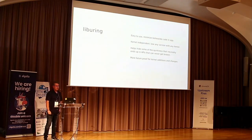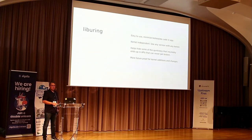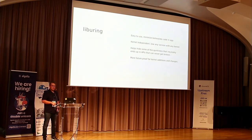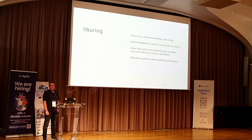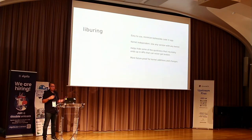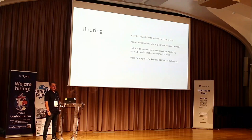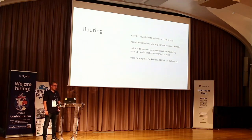Then there's liburing. You can use the raw kernel interface, but most applications end up using liburing — it's a much easier interface to approach. It's a very light interface, supposed to be fast to use, and kernel-independent. So you can use the newest liburing with an old kernel; some features won't be available, but we're not tying liburing to the kernel version. It helps hide some of the quirkiness that inevitably happens with APIs — where you can't fix rough edges in the kernel, liburing can provide an API that gets around them.